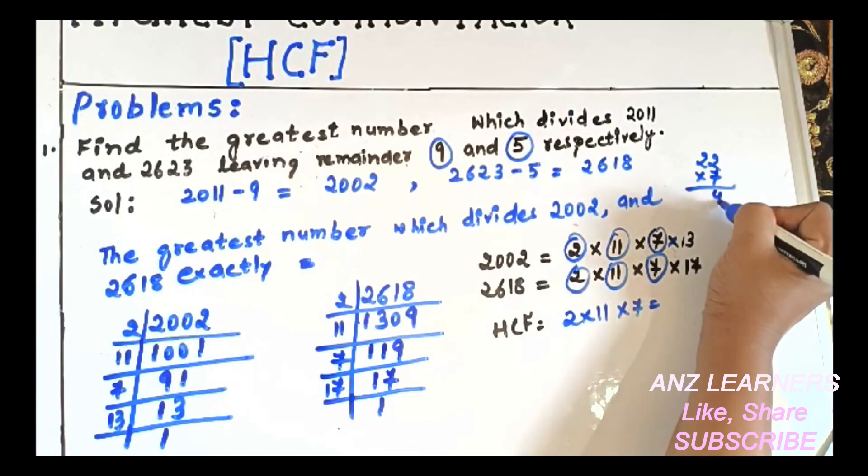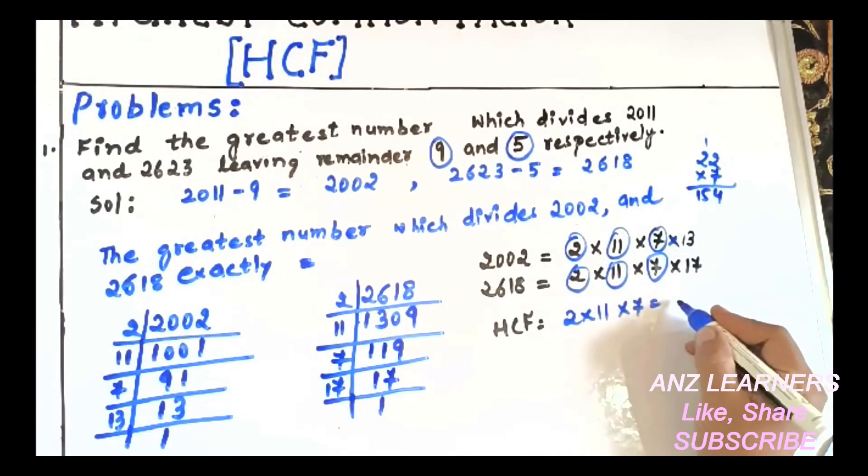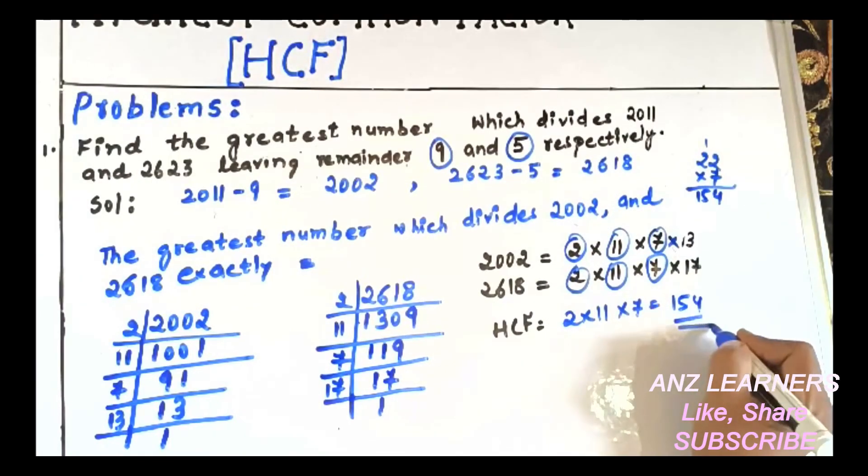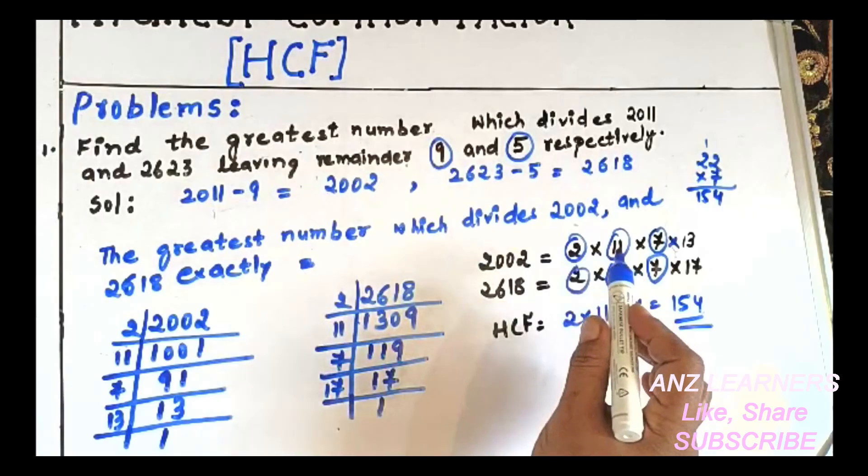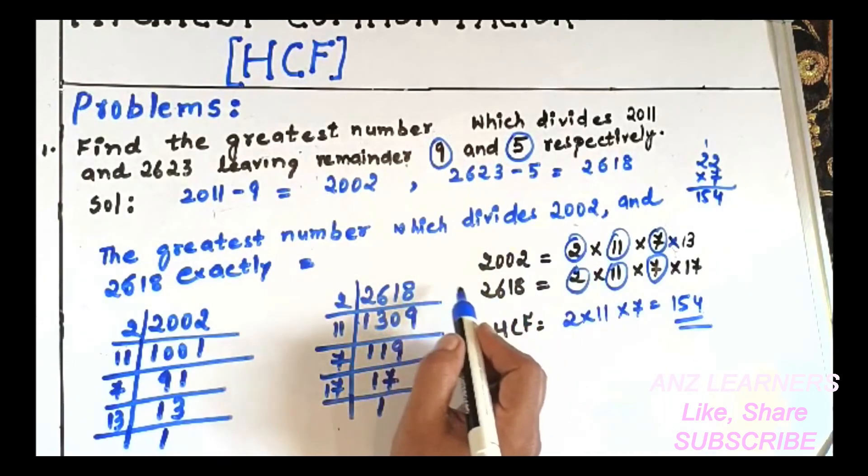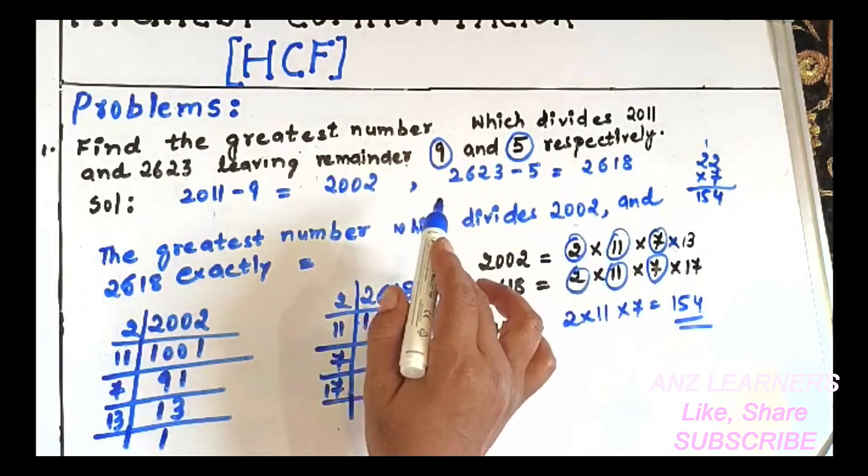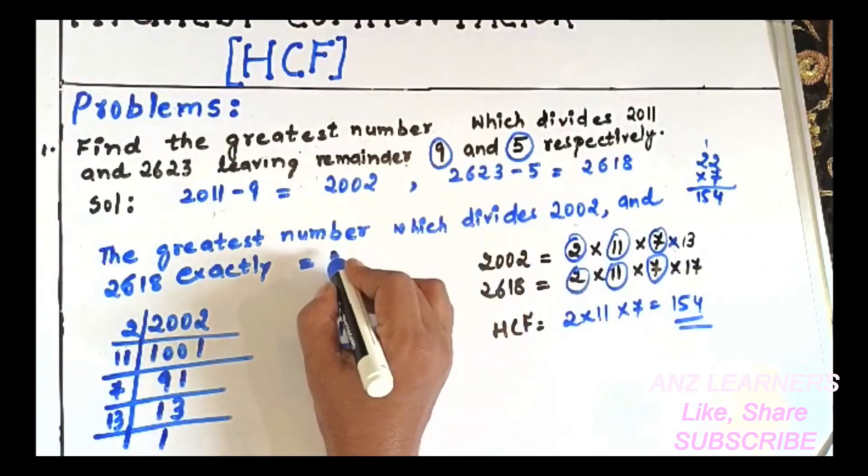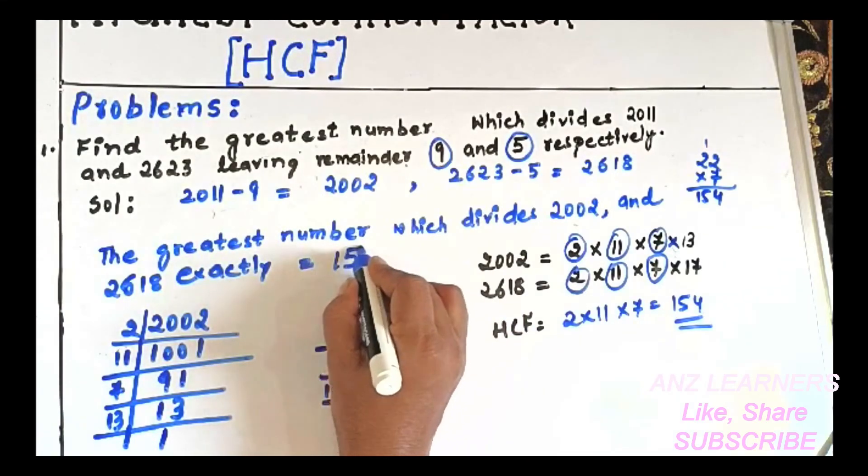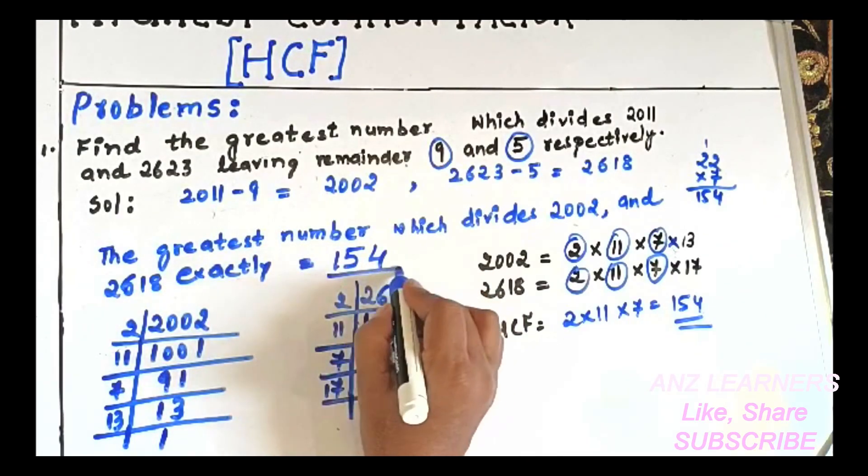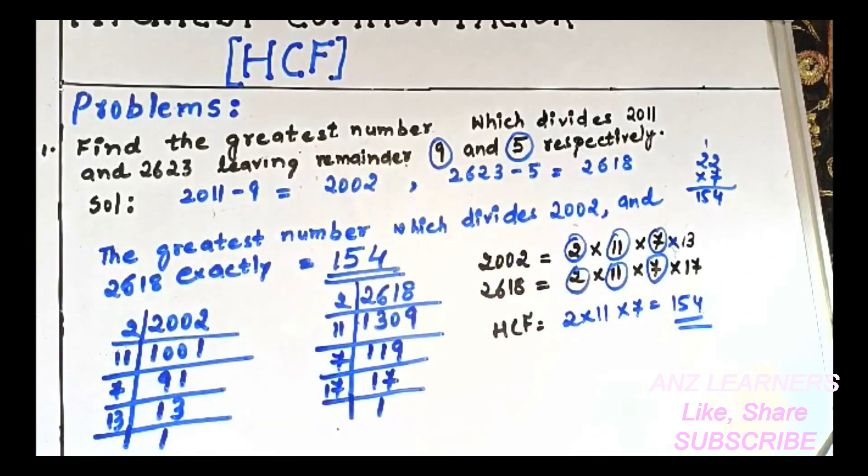equals 154. So the greatest number which divides 2002 and 2618 leaving remainders 9 and 5 will be 154. Thank you.